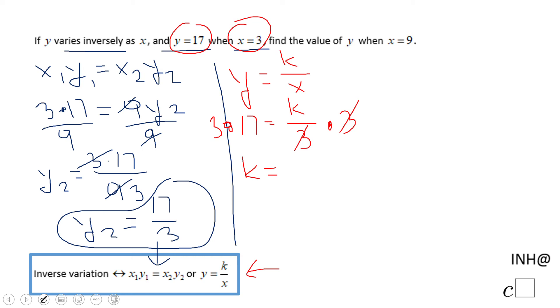Now in the last step, we're going to use the same equation y equals k over x. We're just going to replace k with 51, and we're going to use the second part of the problem: find y when x is 9. So y will be 51 over 9.